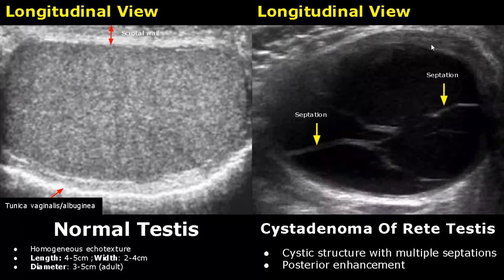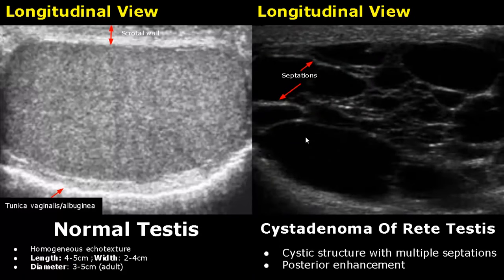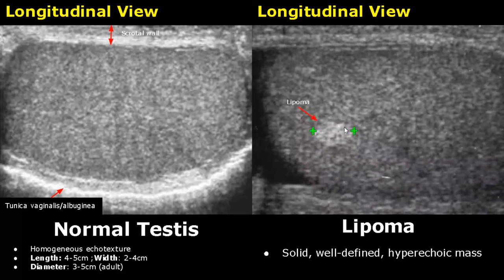Cystadenoma of the rete testis is a rare tumor. The cystic structure will contain multiple septations followed by posterior acoustic enhancement. Here is another image of cystadenoma of the rete testis — it is a cystic structure with multiple septations.